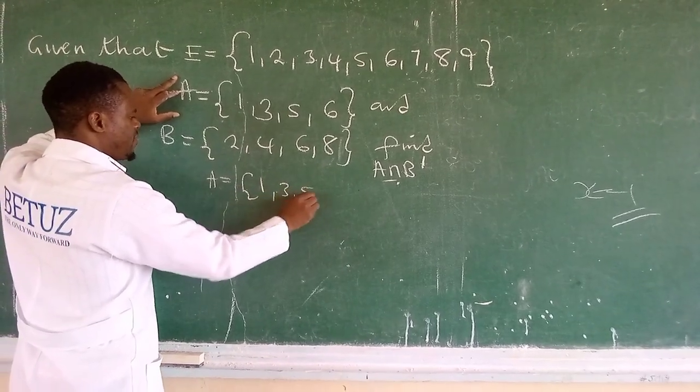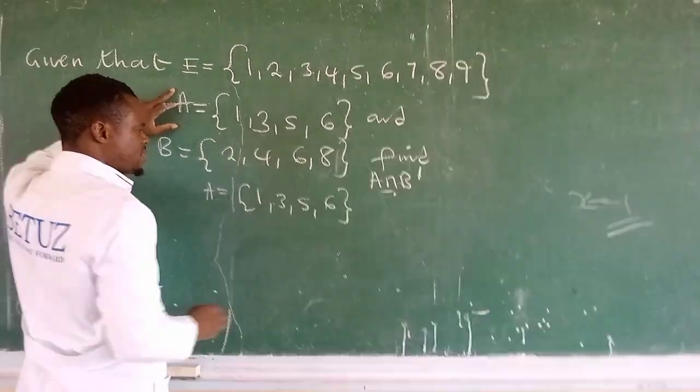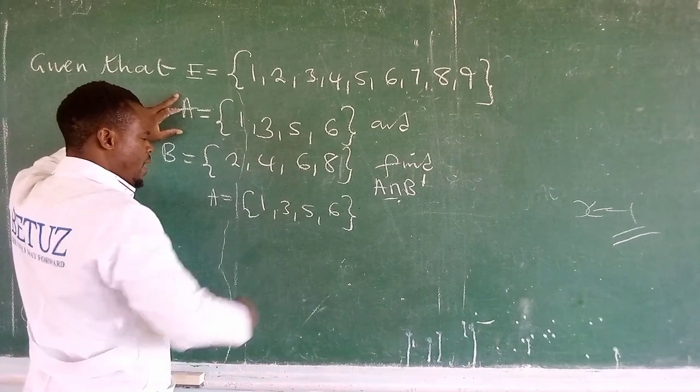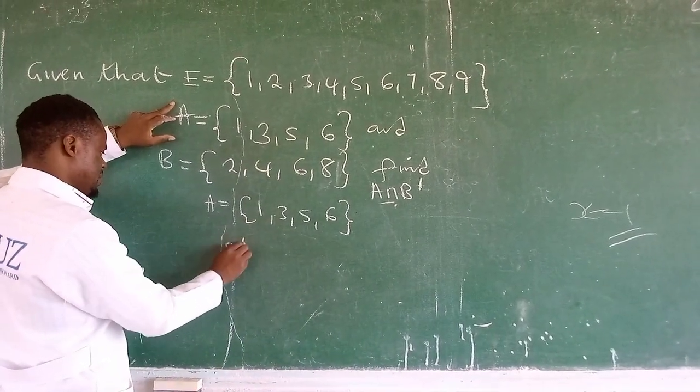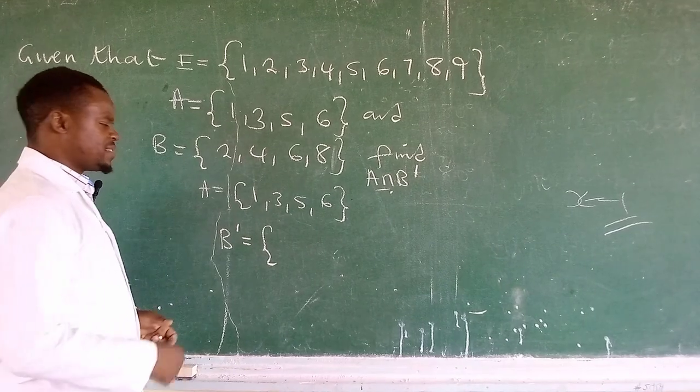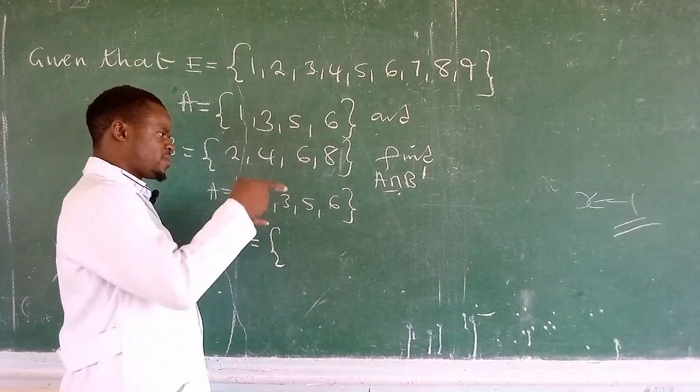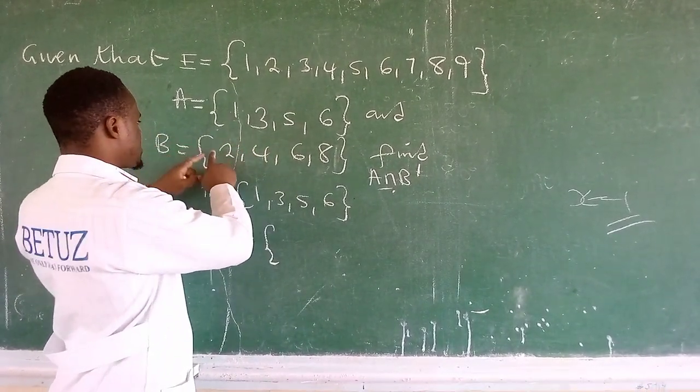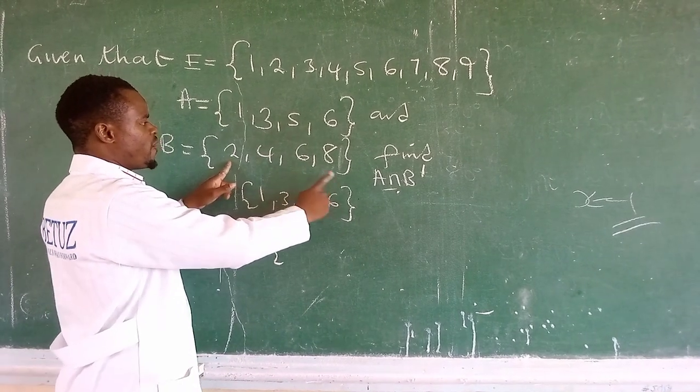Let's do this. We write set A: {1, 3, 5, 6}. Those are the elements. How about B complement? B complement is actually a set of elements that are not there in set B. So when we take set B, we now fall back